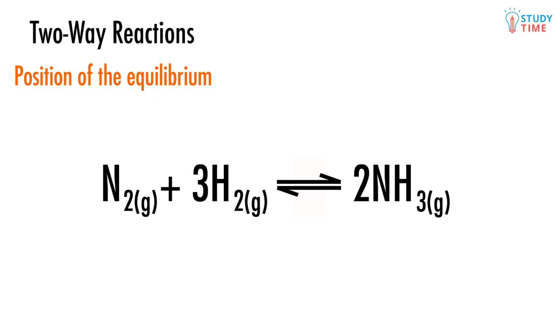It's also important to understand what's meant by the position of the equilibrium. For example, in this reaction right now, you can simply think of the equilibrium being exactly in the middle, between the reactants and the products. Now let's say the equilibrium has shifted to the right. It's now closer to the product, ammonia, and this means that the forward reaction is going to be favored.